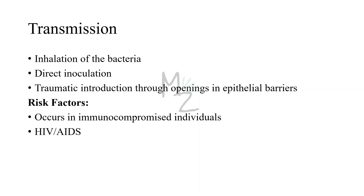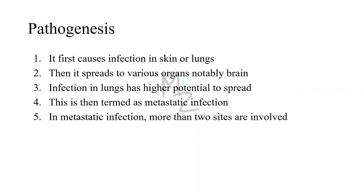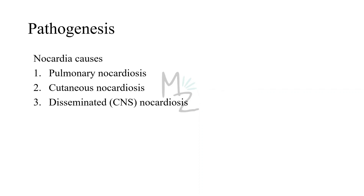Pathogenesis: Nocardia asteroides first causes infection in the skin or lungs, then spreads to various organs, notably the brain — this is termed disseminated infection. The lung infection has a higher potential to spread, and when it spreads it is called metastatic infection, in which more than two sites are involved. Nocardia causes three types of nocardiosis: pulmonary, cutaneous, and disseminated.